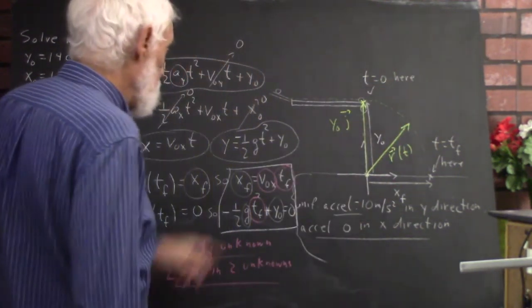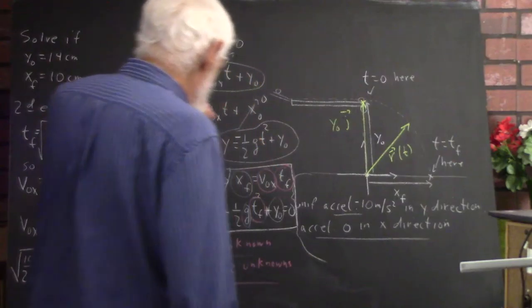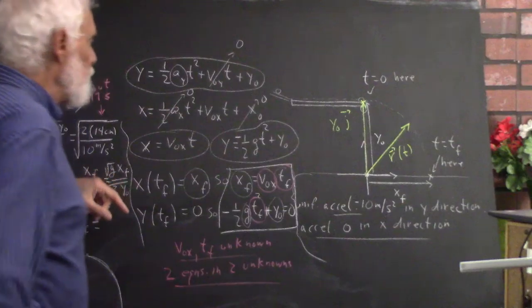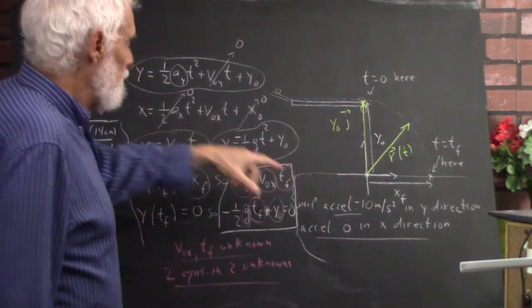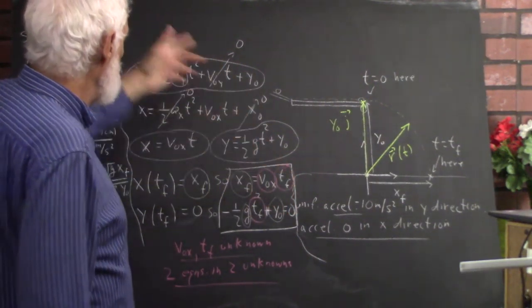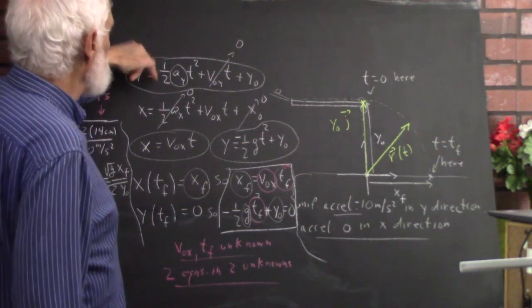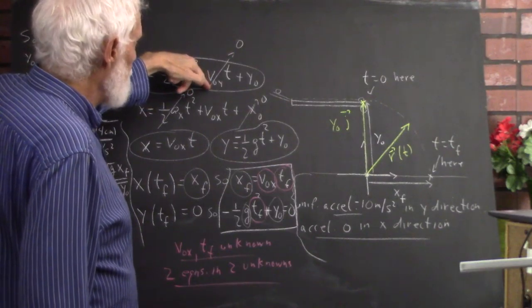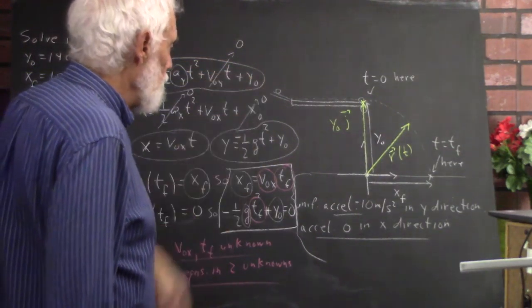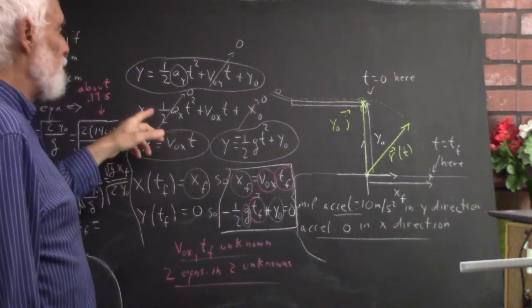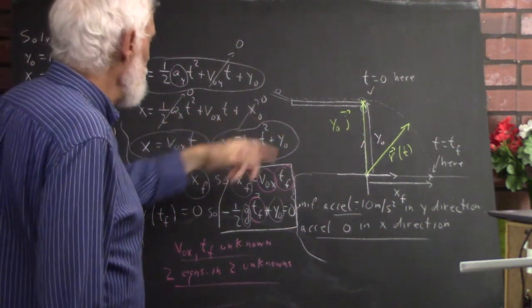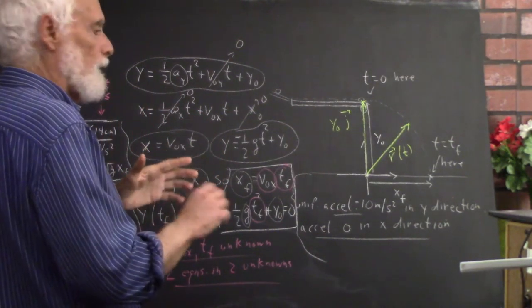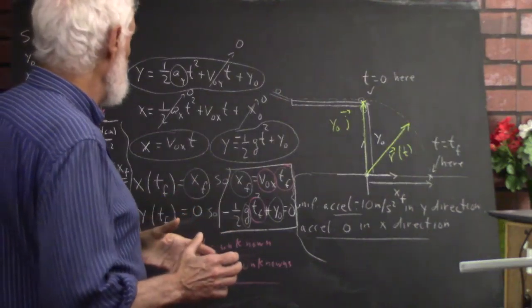The y-coordinate in general is one-half times y-acceleration times t-squared, plus initial velocity in the y-direction times t, plus y-naught. And the x is the same equation for the x-quantities — just the general form of the position function for uniformly accelerated motion.